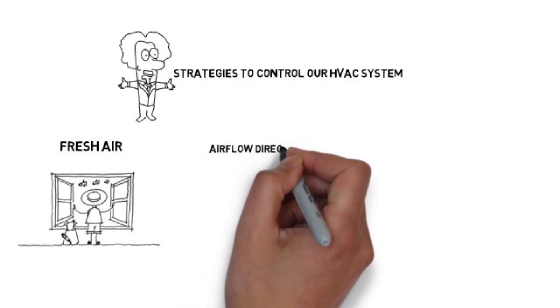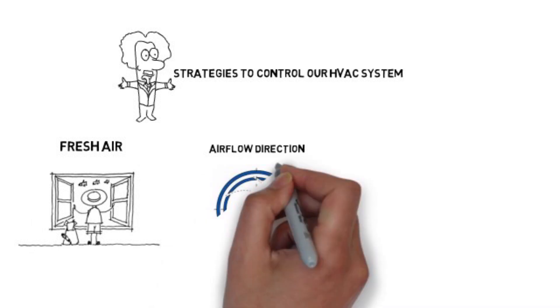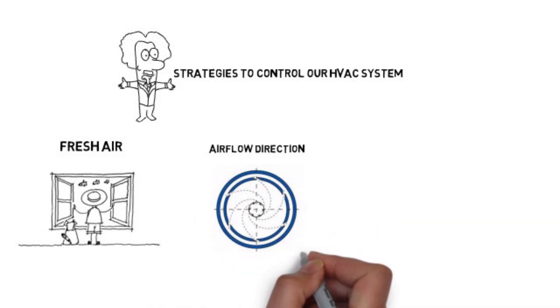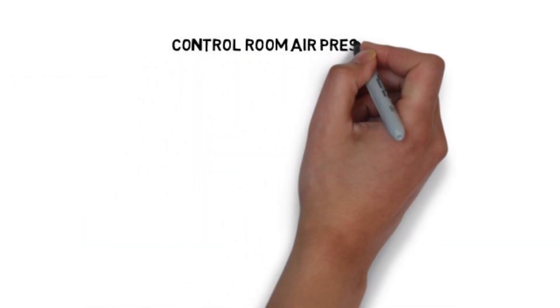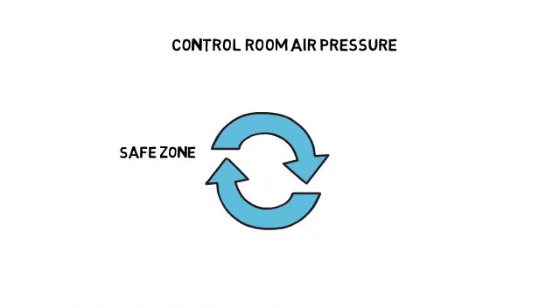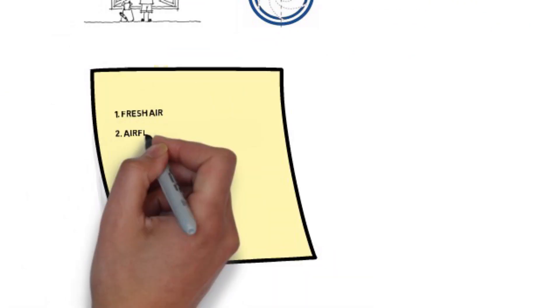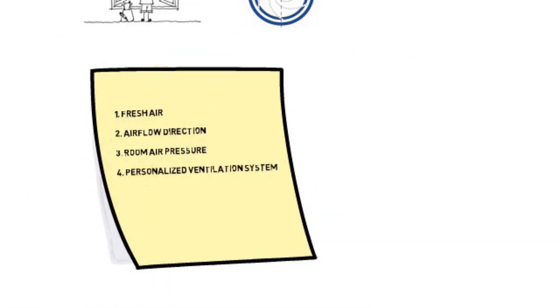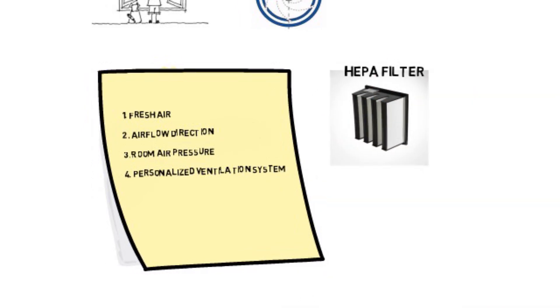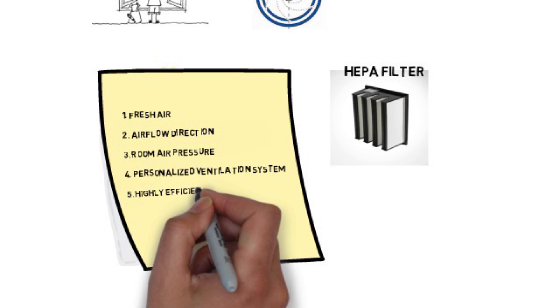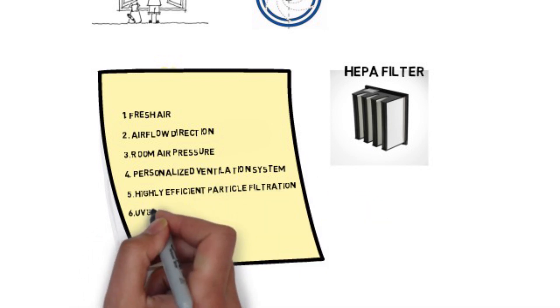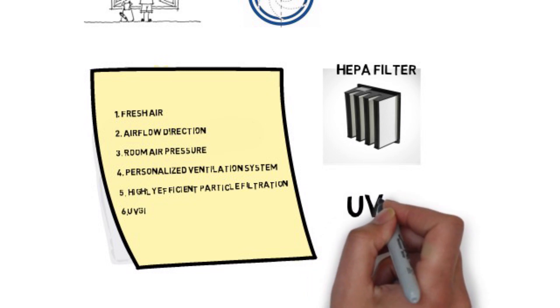Second, control airflow direction. You have to guarantee air flows from a healthy person to the infected person and not vice versa. Third, control room air differential pressure to make sure air flows from safe zones towards the unsafe zones in a building. The fourth strategy is using a personalized ventilation system that supplies 100 percent outdoor air, highly filtered, or UV-disinfected air directly to the occupant's breathing zone. Other strategies include adding highly efficient particle filtration to central ventilation systems and utilizing an ultraviolet germicidal irradiation system, or UVGI, to disinfect the air.